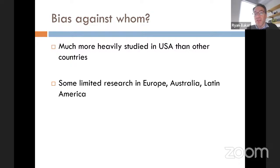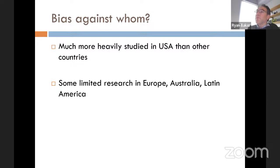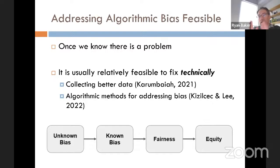Algorithmic bias has been much more heavily studied in the United States than in other countries. As recently as 2021, there was essentially almost no work outside the US on algorithms used in educational technologies. That's changed a lot in the last couple of years, with some limited research in Europe, Australia, and Latin America — but still much less than what's needed.